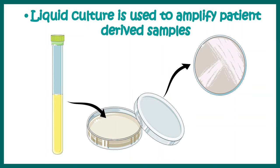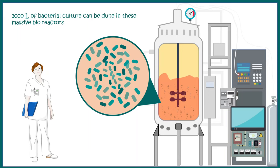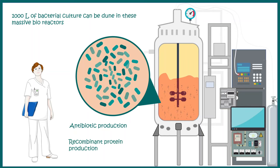From an industrial perspective, liquid culture systems are really important. In industry, we can grow thousands of liters of bacterial culture to obtain various products. For example, the antibiotic industry needs to grow bacteria in bulk to extract antibiotics. Similarly, industries producing insulin or other recombinant proteins need to produce a huge amount of biomass to extract those products, making liquid culture critically important from an industrial point of view.